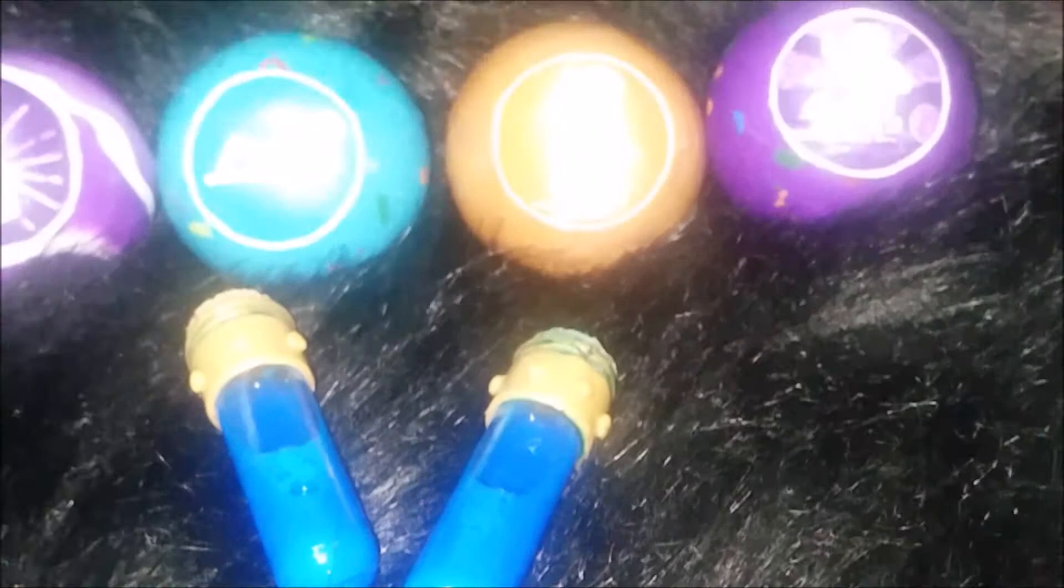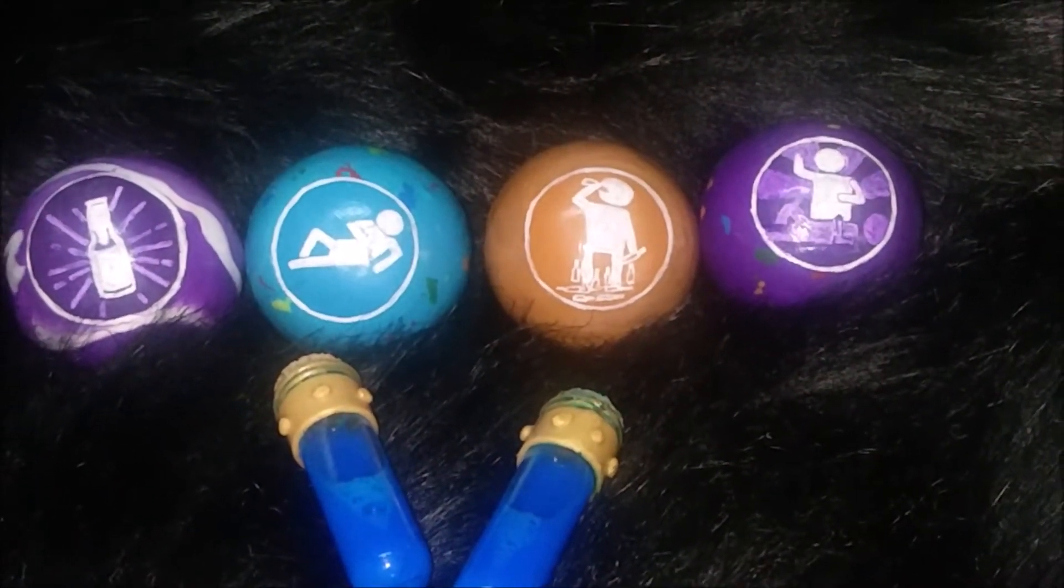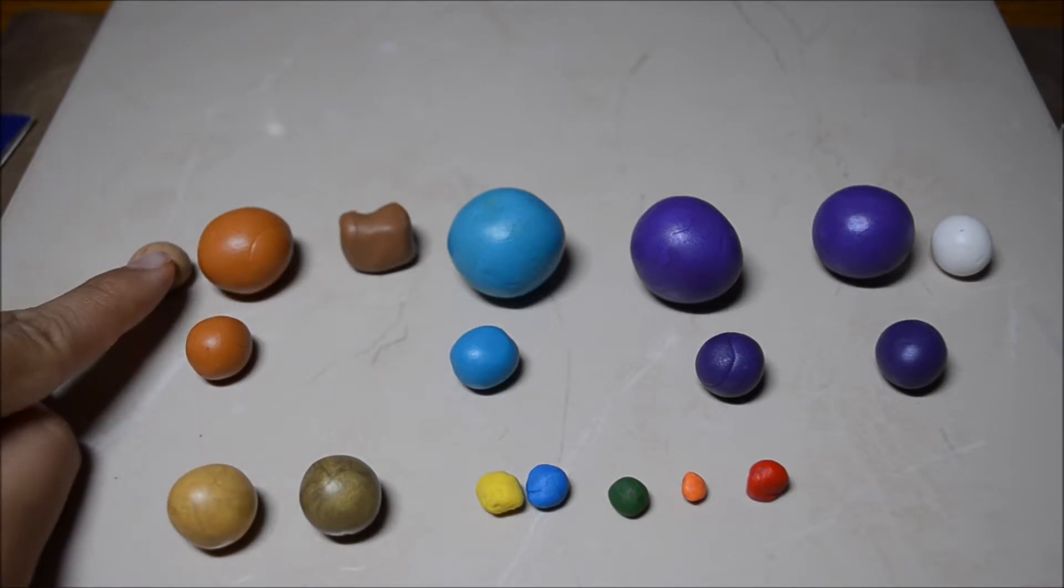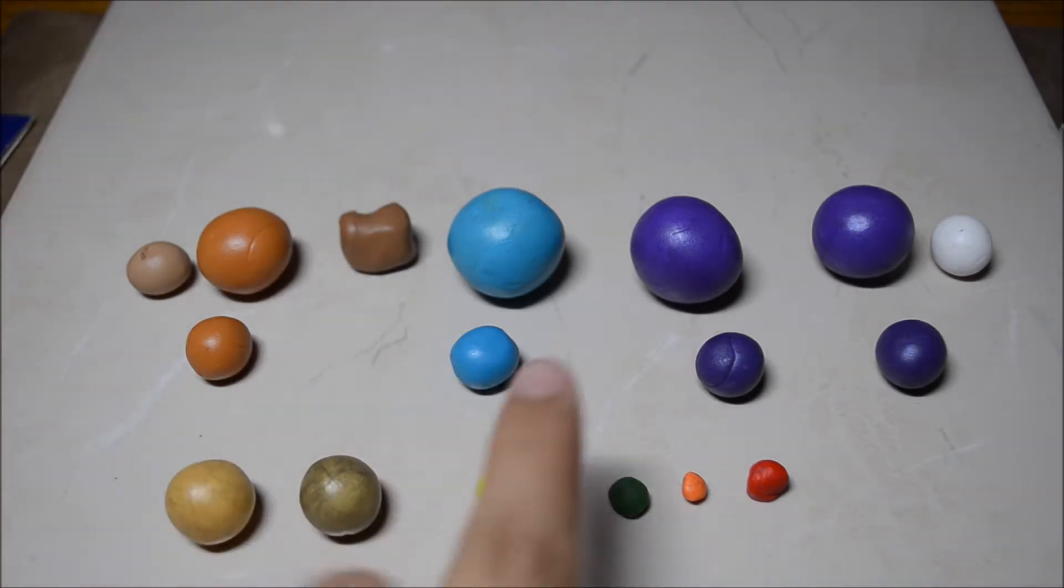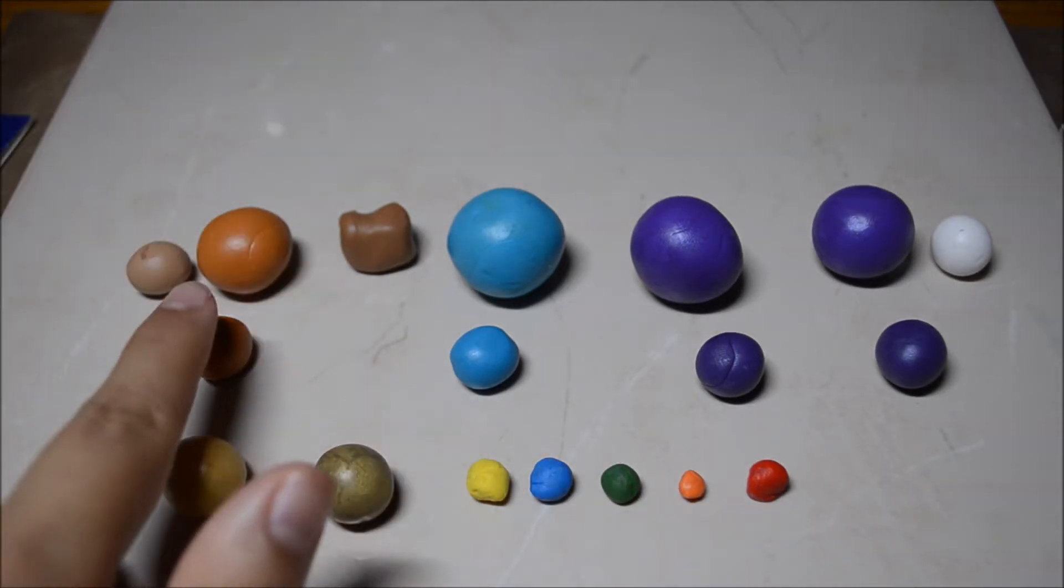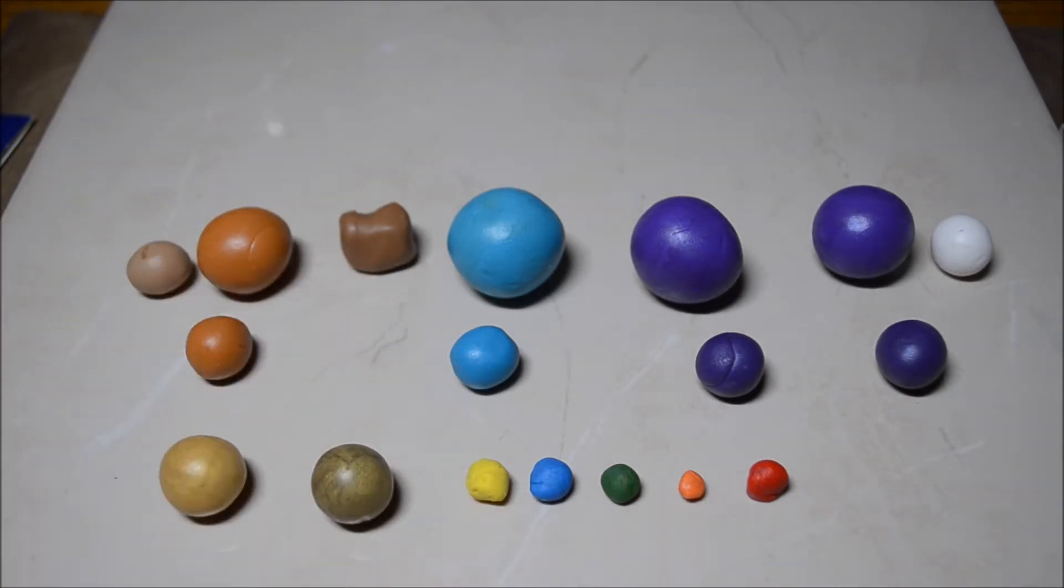But if you want to know how to make these, just stay tuned. For the polymer clay you'll need light brown, orange, darker brown, blue, purple, white, two types of gold, yellow, blue, green, orange, and red.